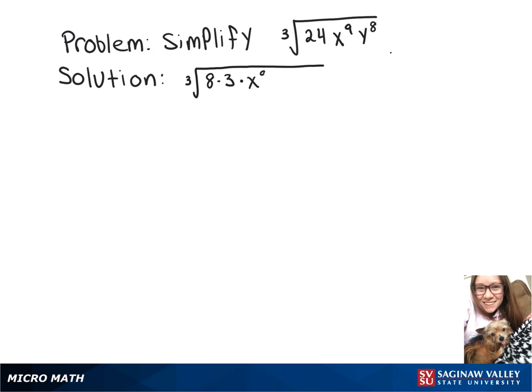And then we can leave x to the 9th, and we can turn y to the 8th into y to the 6th times y squared. That's because when we take the cube root, we're going to divide those exponents by 3.